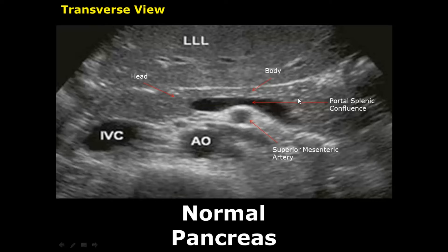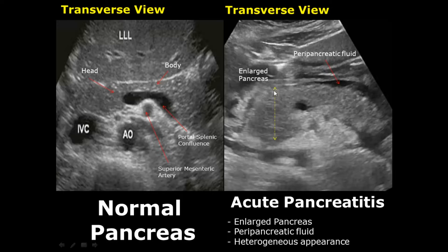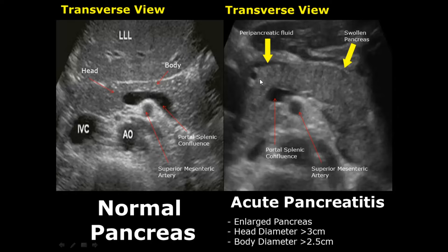Acute pancreatitis is the inflammation of the pancreas. In this condition we will see a heterogeneous appearance of the pancreas, and it will appear enlarged, and there will be peripancreatic fluid — some fluid outside the pancreas. Here you can see the pancreas is enlarged: if the diameter of the head exceeds three centimeters and if the diameter of the body exceeds 2.5 centimeters, it is a sign of pancreatitis.